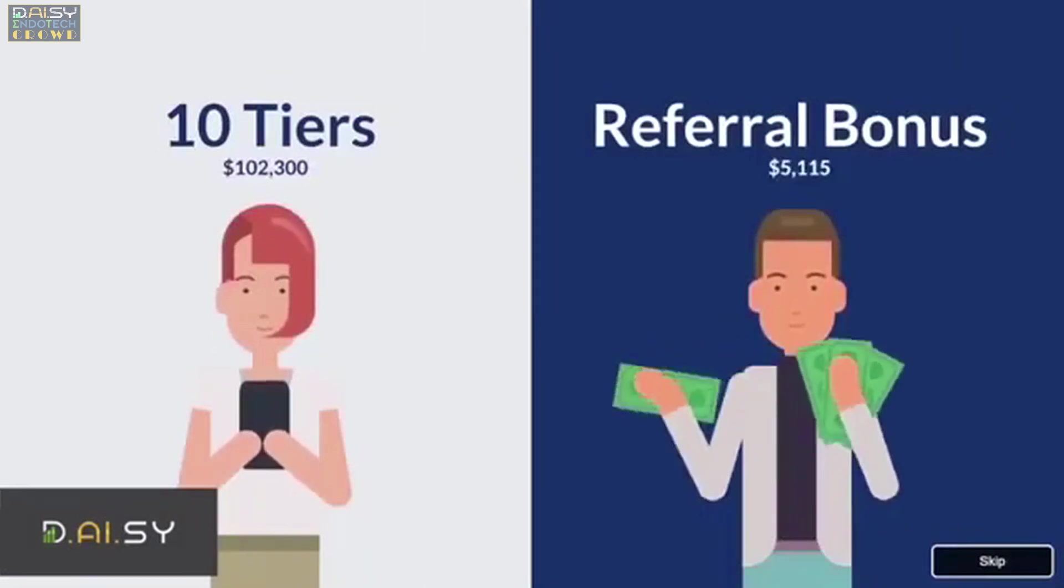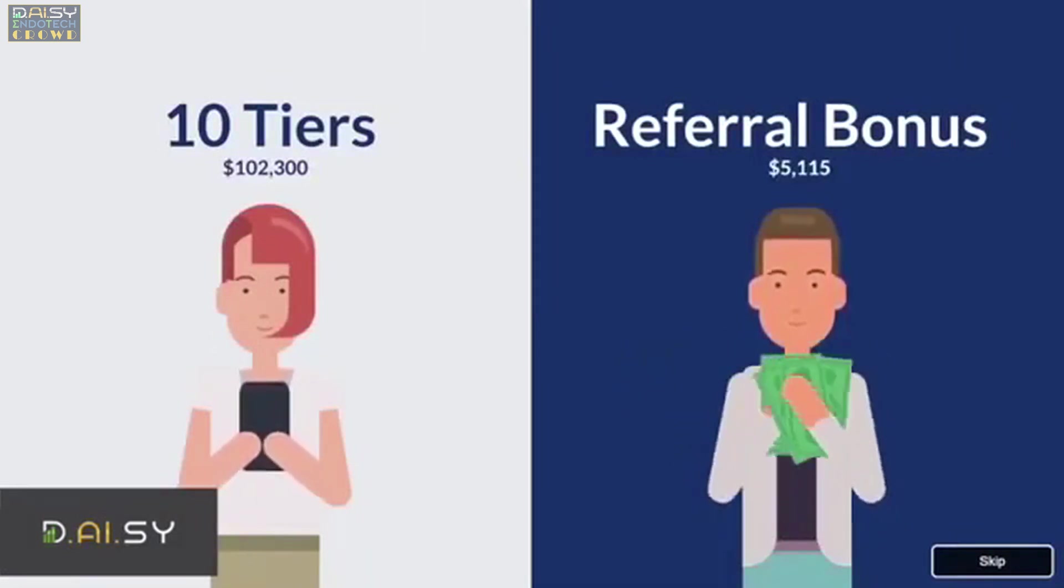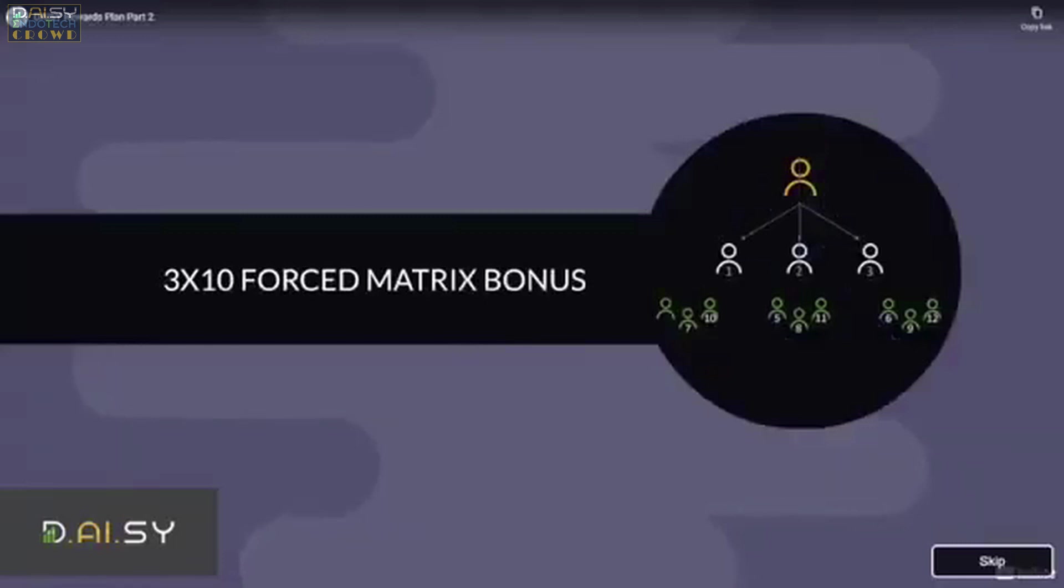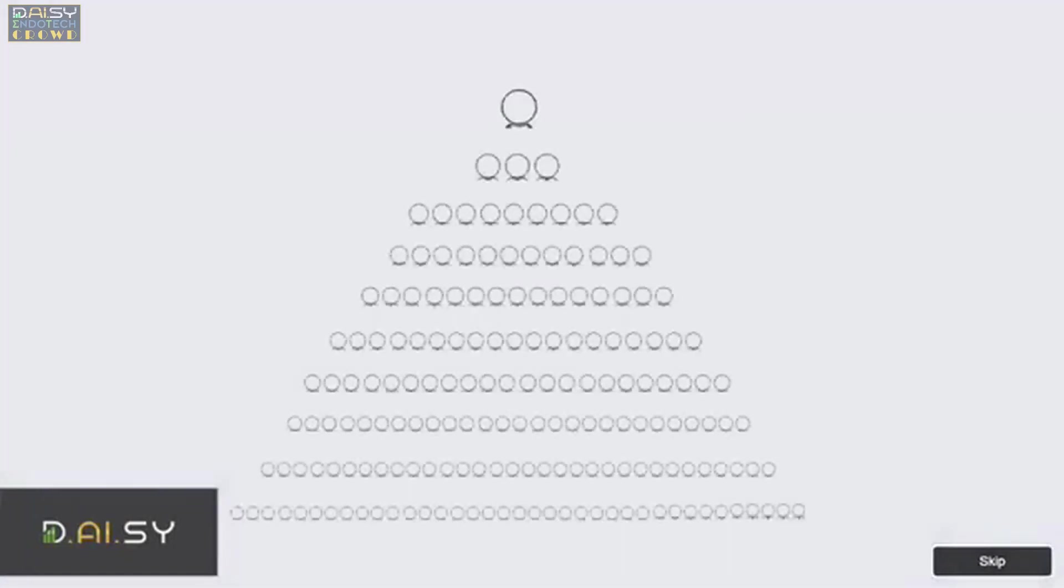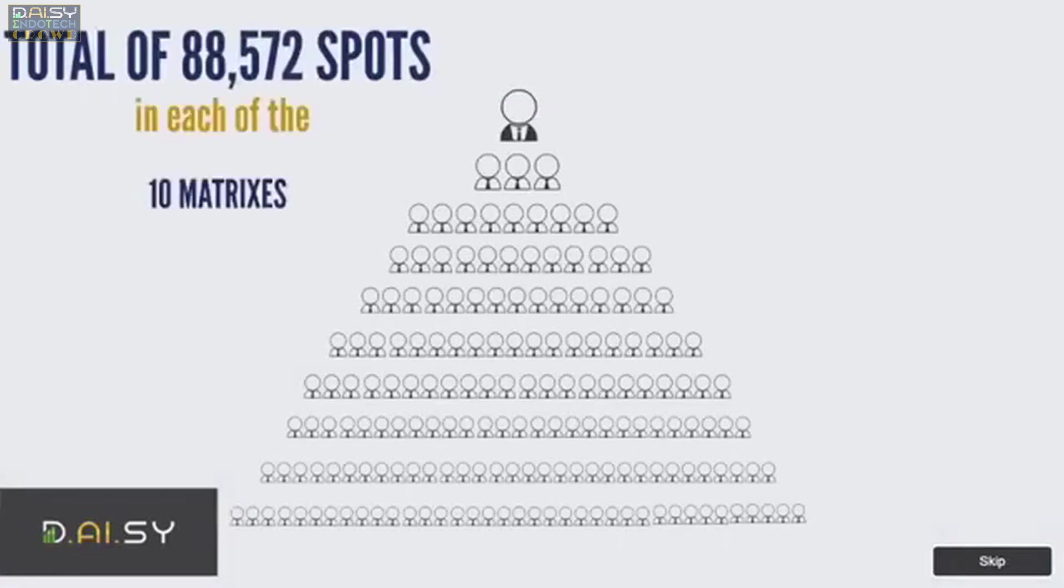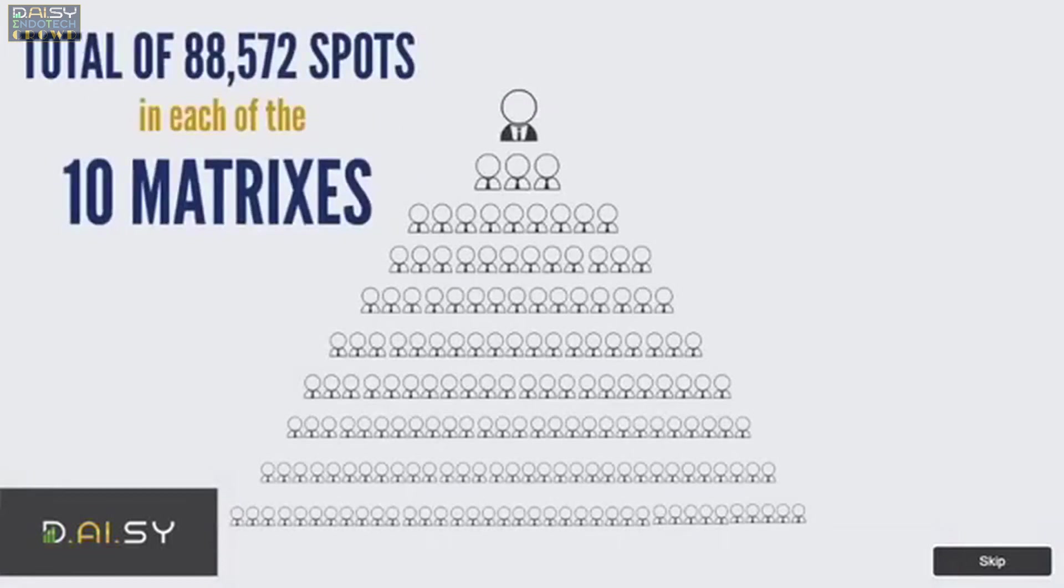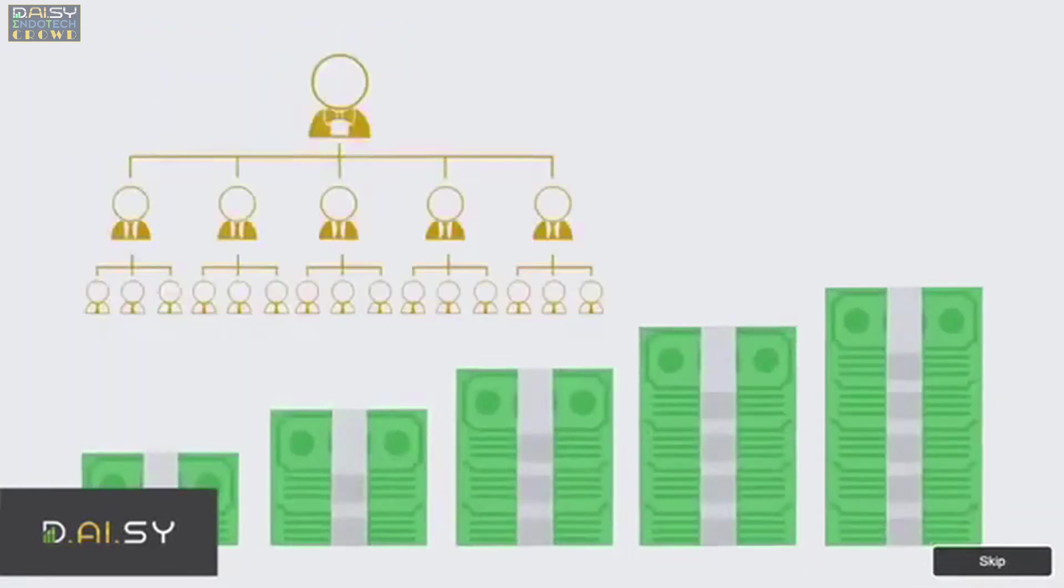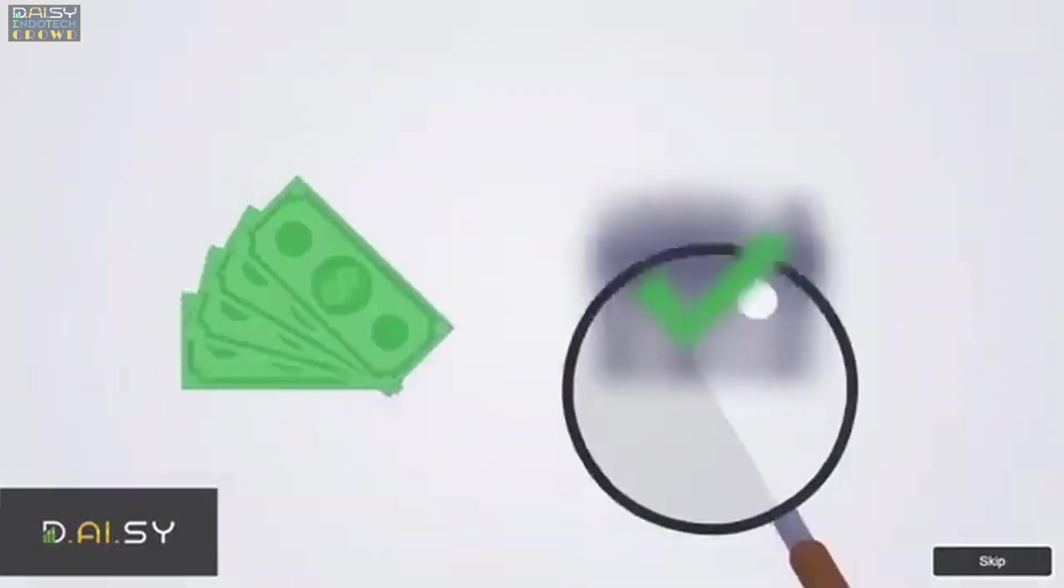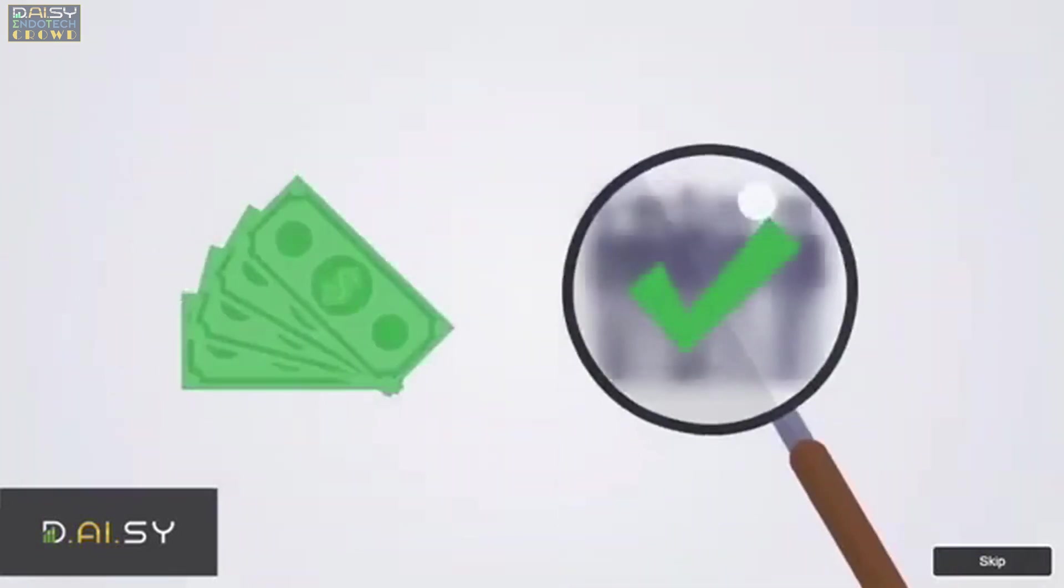Each contribution tier has its own forced matrix of 3x10 levels with a total of 88,572 spots in each of the 10 matrices. You can only be rewarded the matrix bonus from the funding tiers you own, not higher. Higher contribution tiers than yours funded in your downline will compress up to the next qualified member.